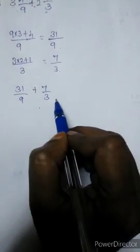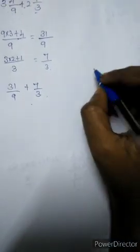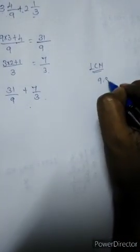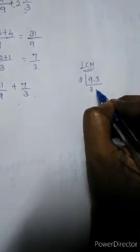How can we convert? We want to take LCM for this denominator. LCM 9, 3. For factorizing you have to take prime number. 3. 3 times 3 is 9. 1 times 3 is 3.